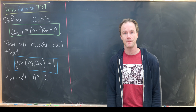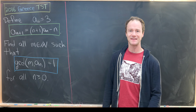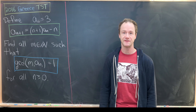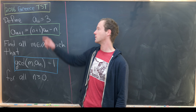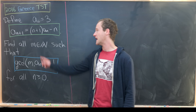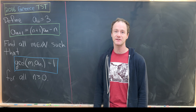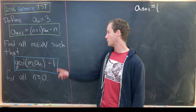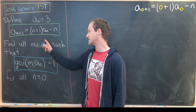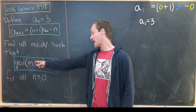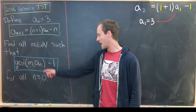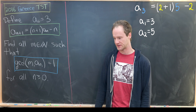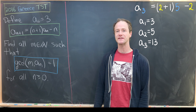Let's look at the statement of this problem. We want to define a recursive sequence by a₀ equals 3, and then aₙ₊₁ equals (n+1) times aₙ minus n. Then we want to find all natural numbers m such that the GCD of m with aₙ is equal to 1 for all n greater than or equal to 0.